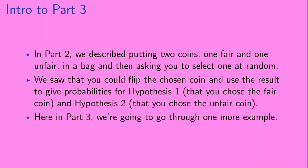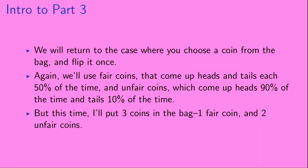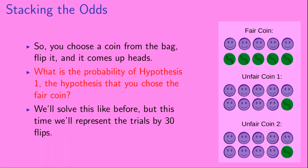Here in Part 3 we're going to go through one more example. We'll return to the case where you choose a coin from the bag and flip it exactly once. Again we'll use fair coins that come up heads and tails each 50% of the time, and unfair coins which come up heads 90% of the time and tails 10% of the time. But this time I'm going to put three coins in the bag: one fair coin and two unfair coins. So you choose a coin from the bag, flip it, and it comes up heads.